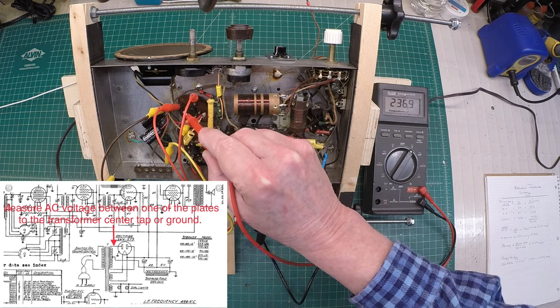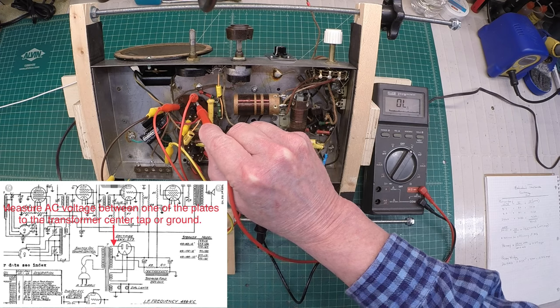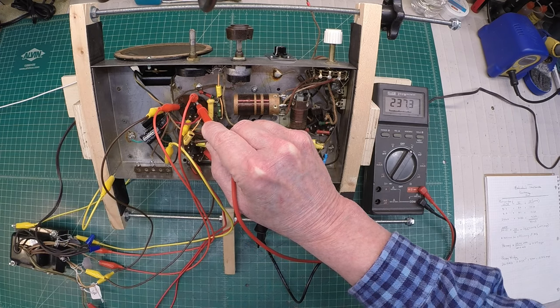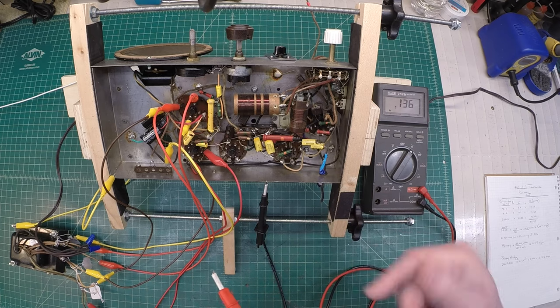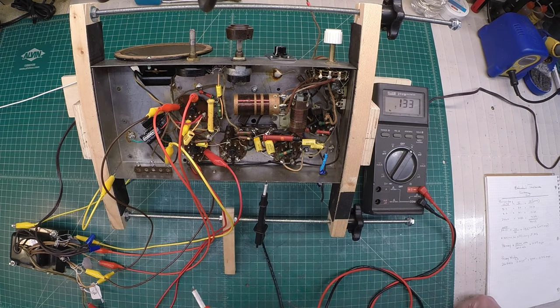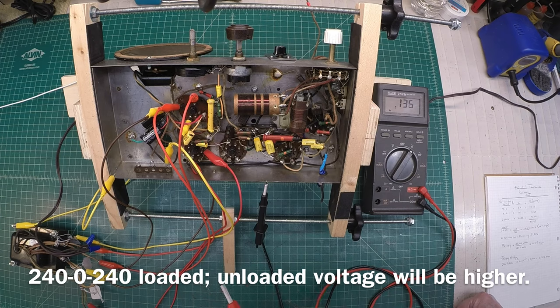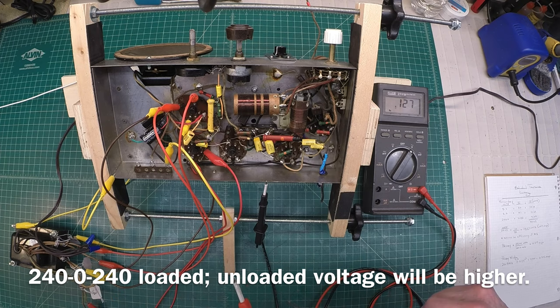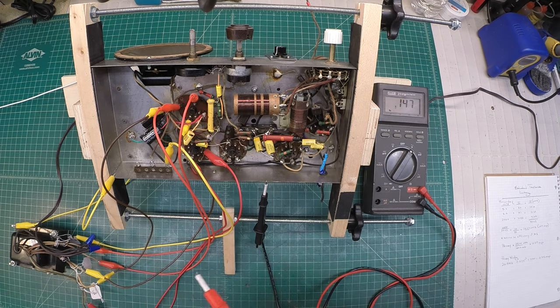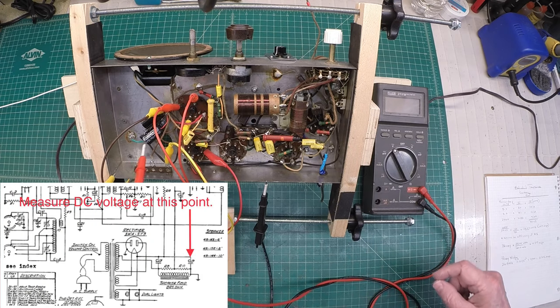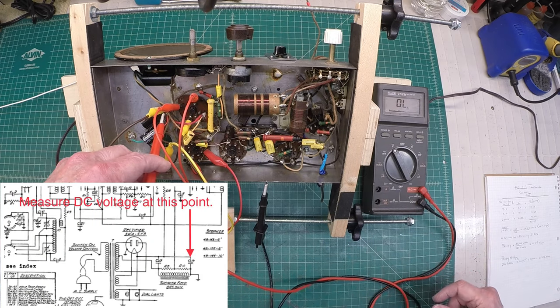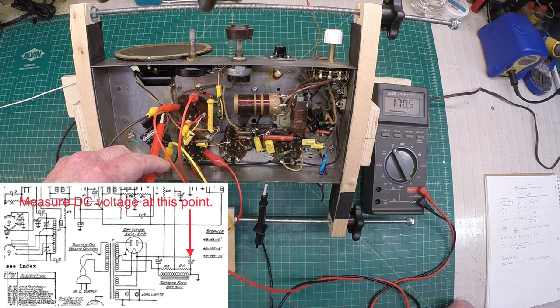So 237 will round up, and 237. So the transformer, you know, based on a current of around 30 milliamps would be 240-0-240. So I'll make a note of that. Let's look at our DC voltage now and see where that resides.